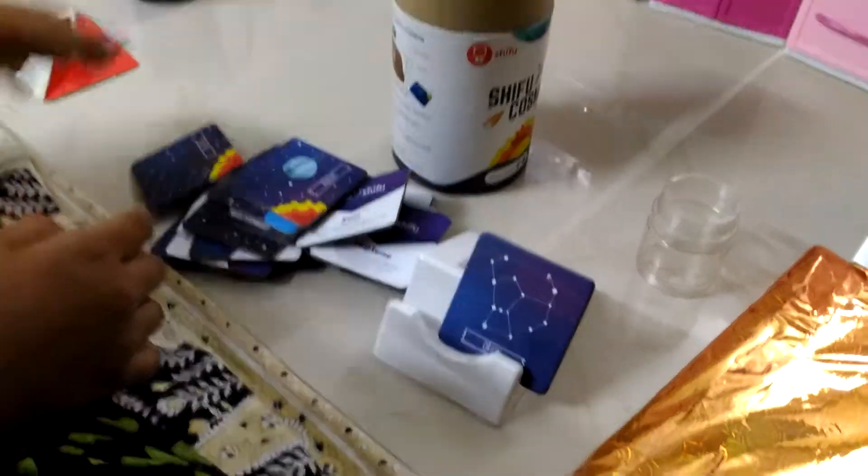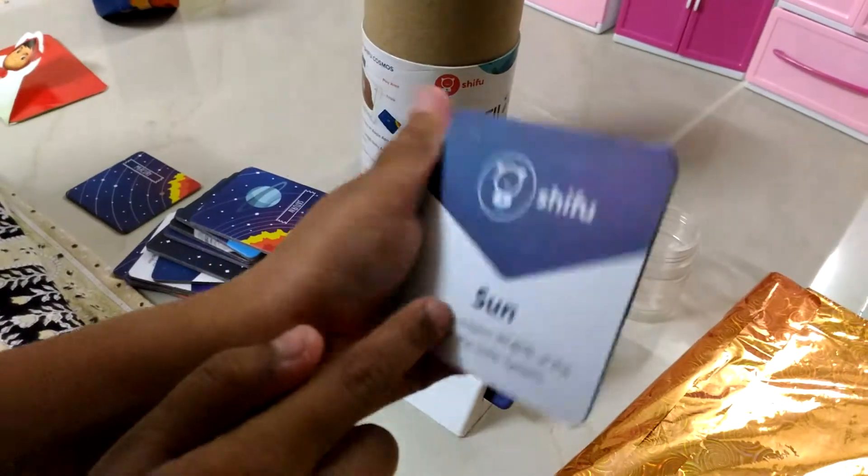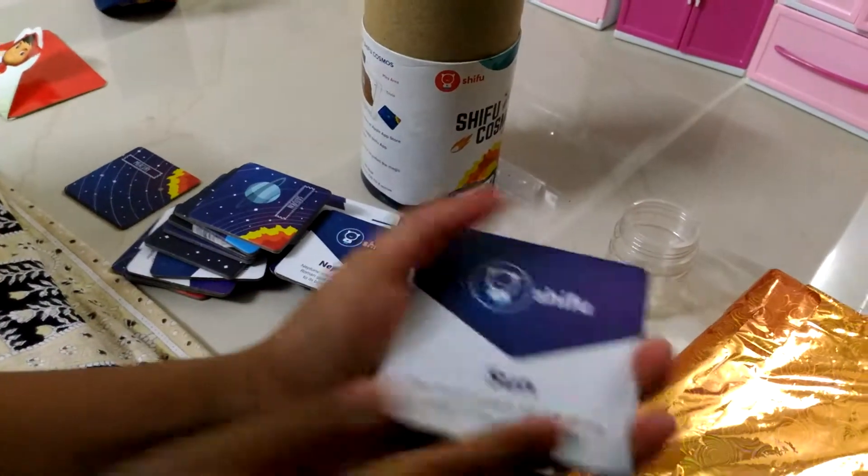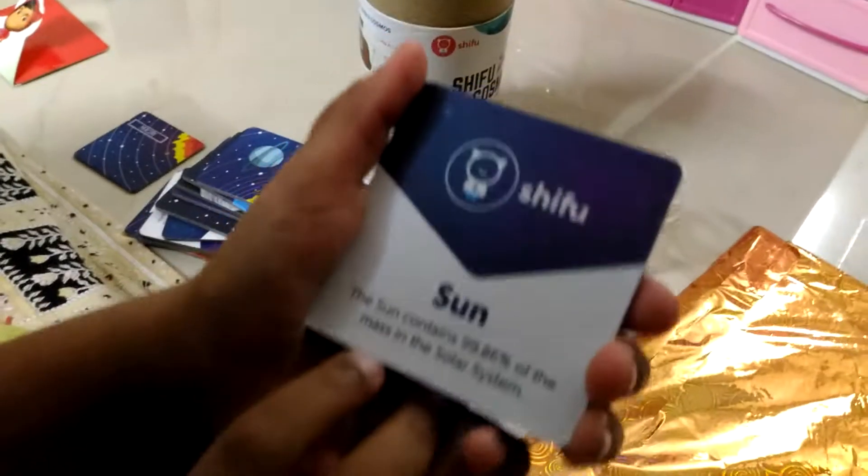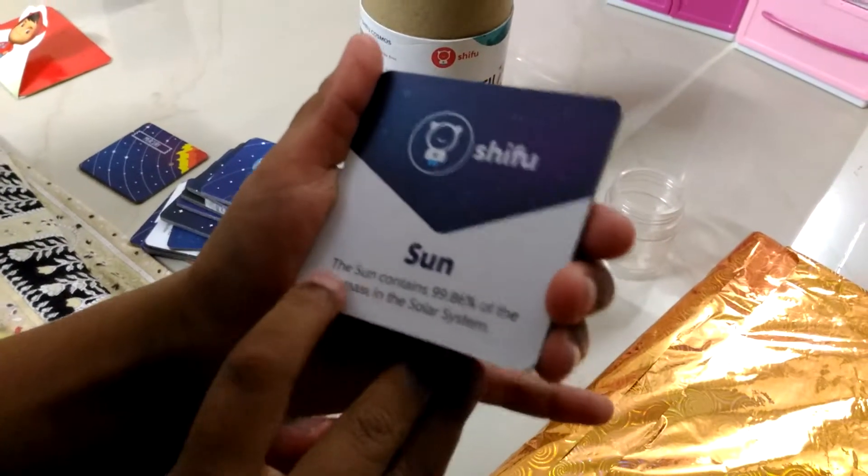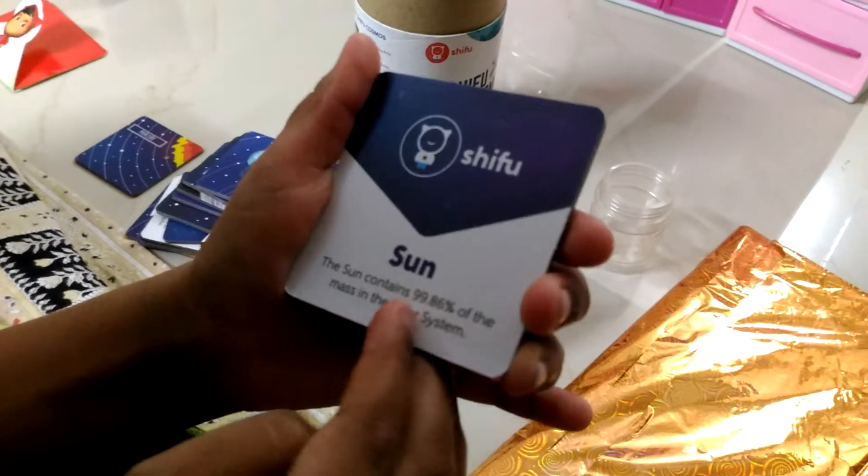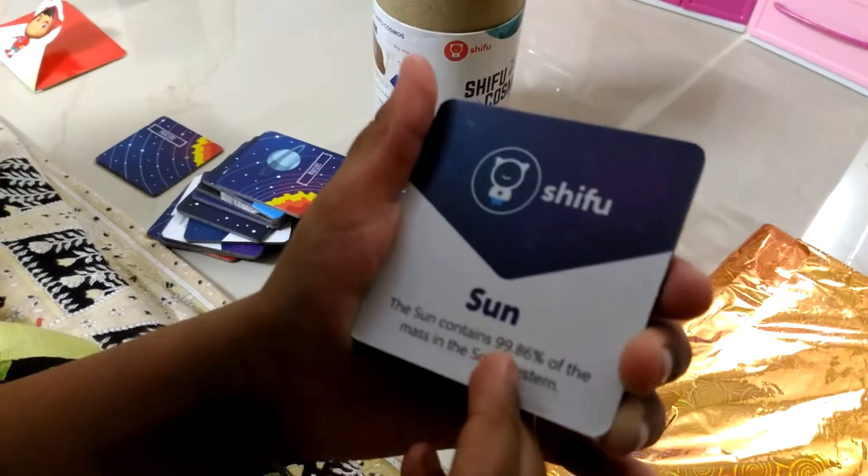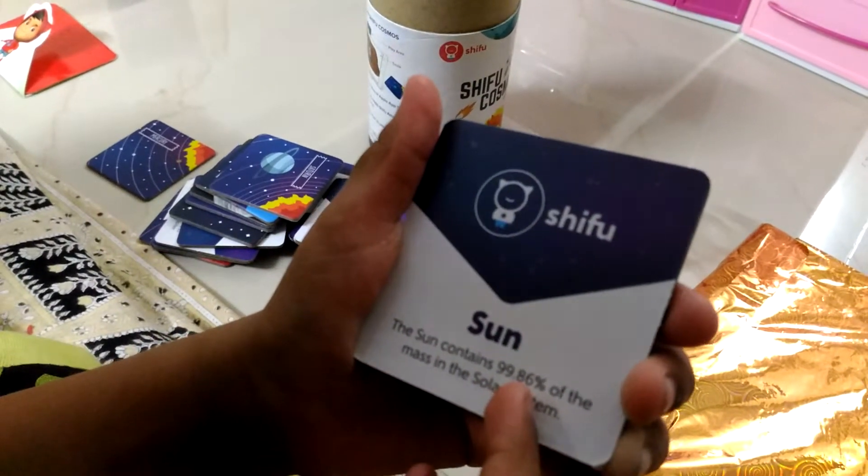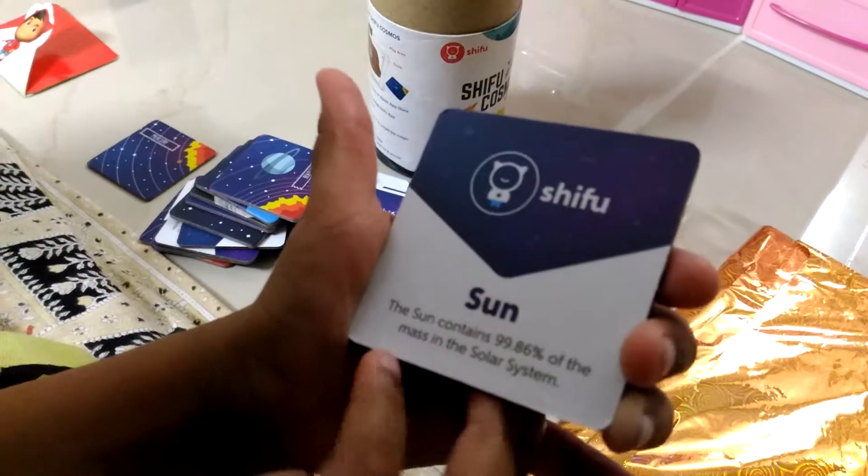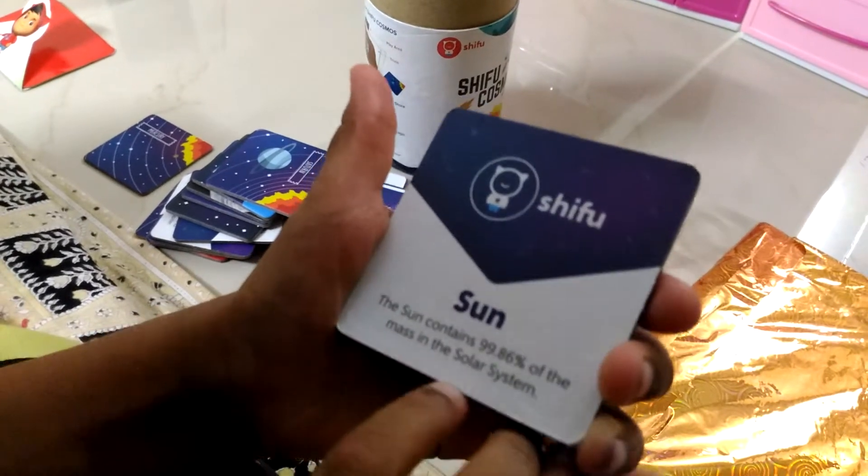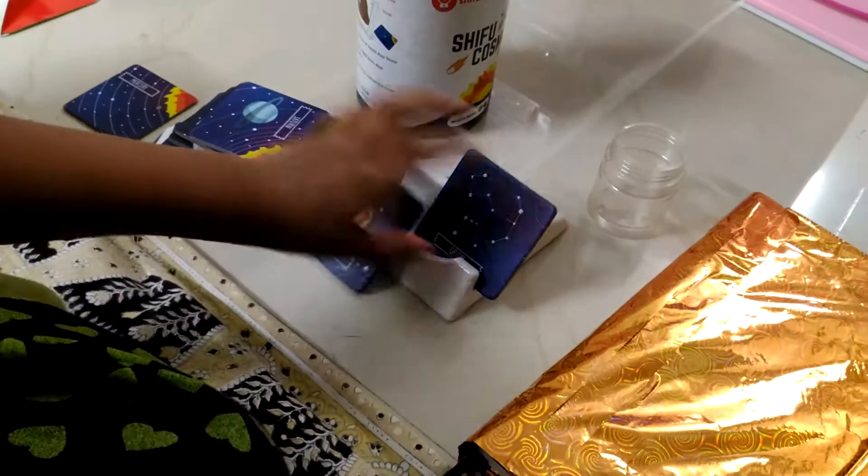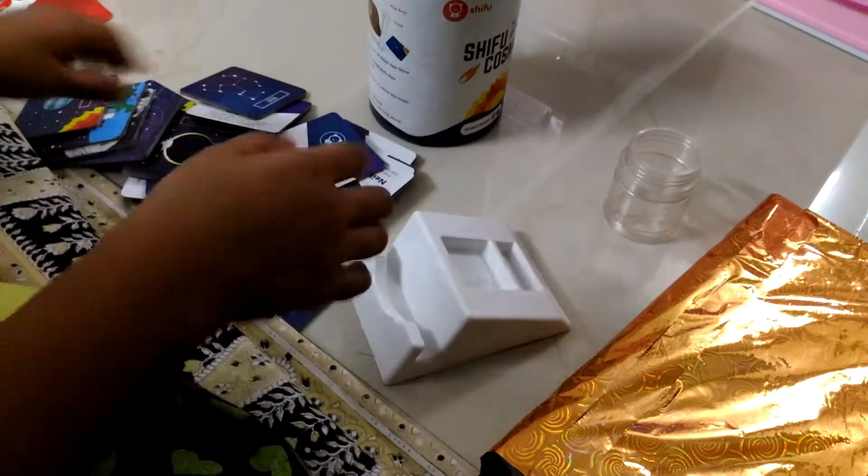So here are all the cards and they give you the facts on the back. For example, if you take the Sun card, there is the fact of the Sun over here. The Sun contains 99.86% of the mass in the solar system. So these are the facts. Like that, there are many cards with facts.